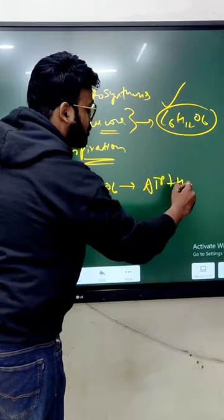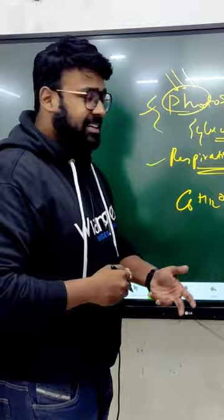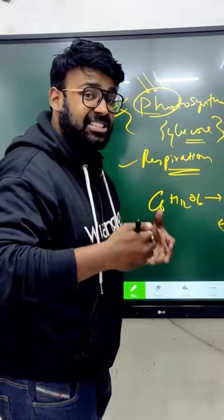Basically, these two processes are meant so that we can extract ATP out of it. ATP is adenosine triphosphate, which is the energy currency of the cell.